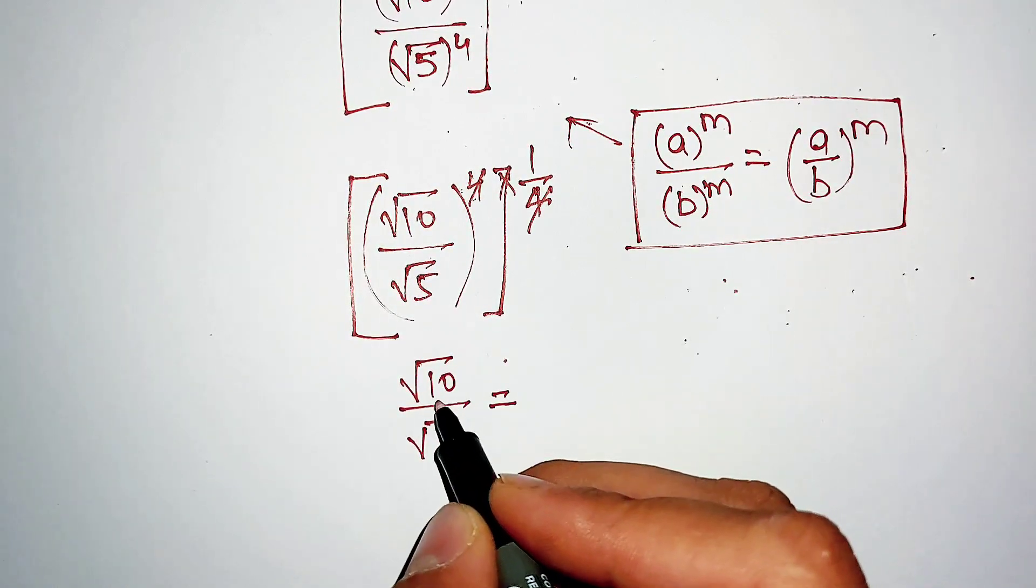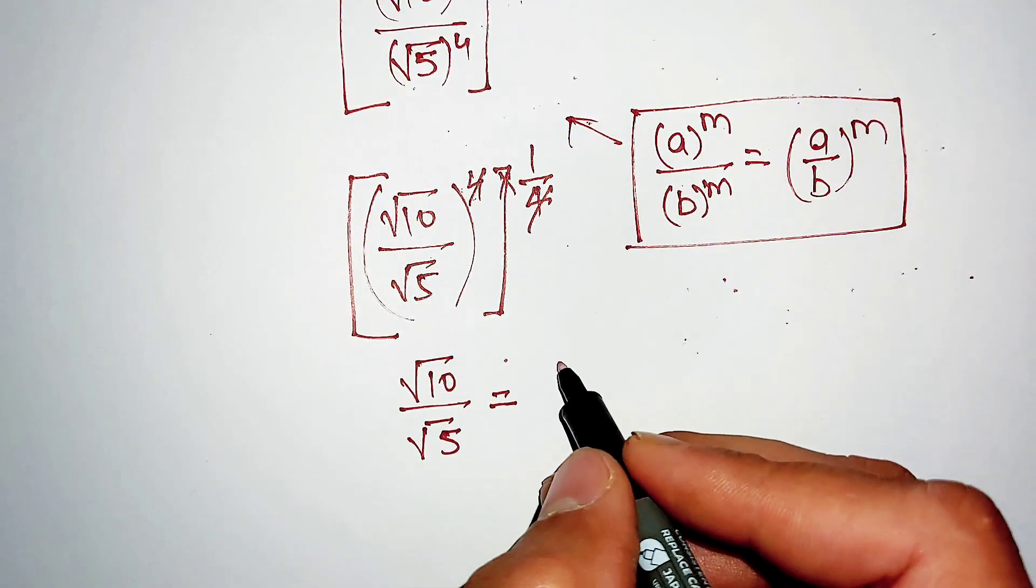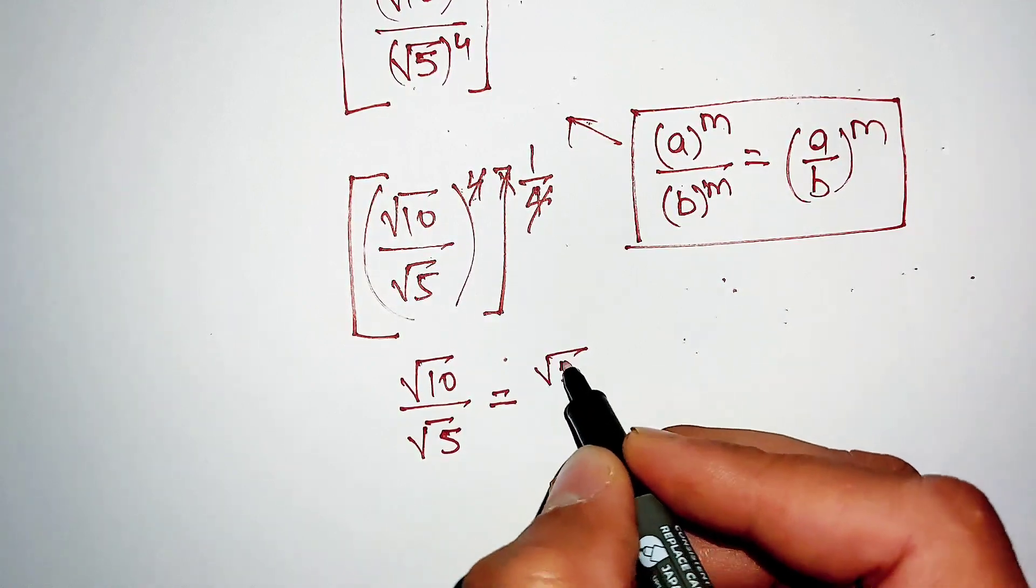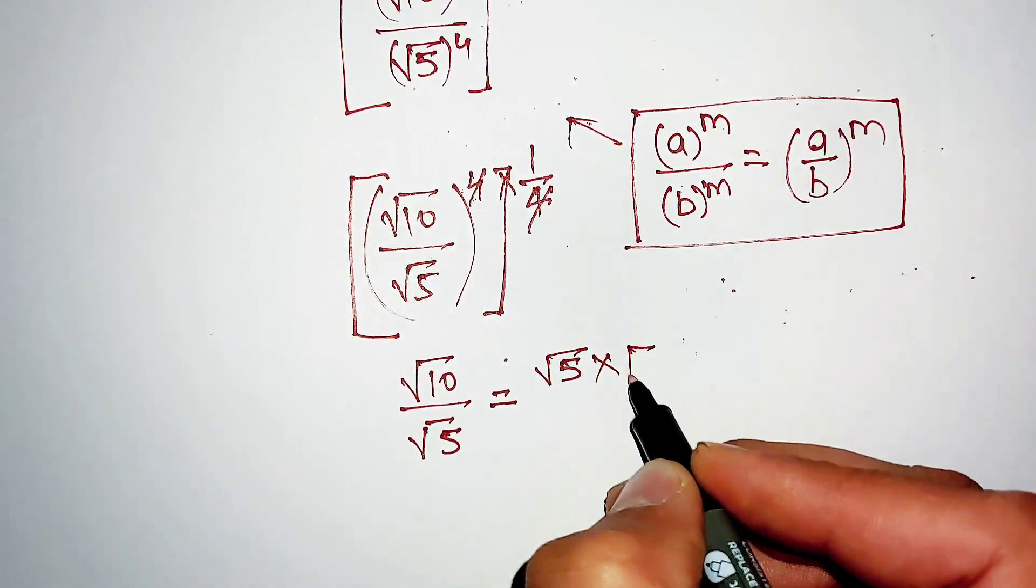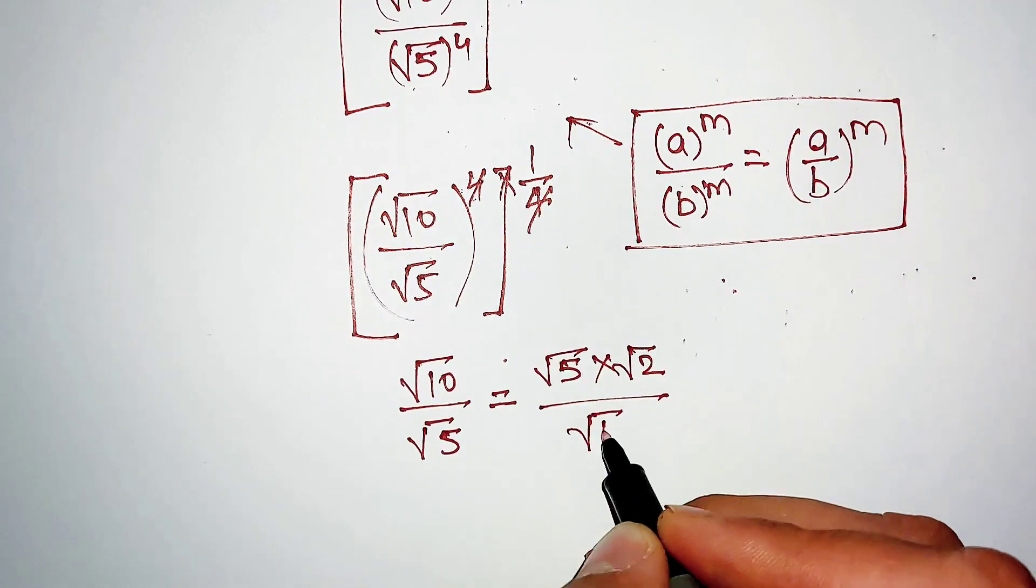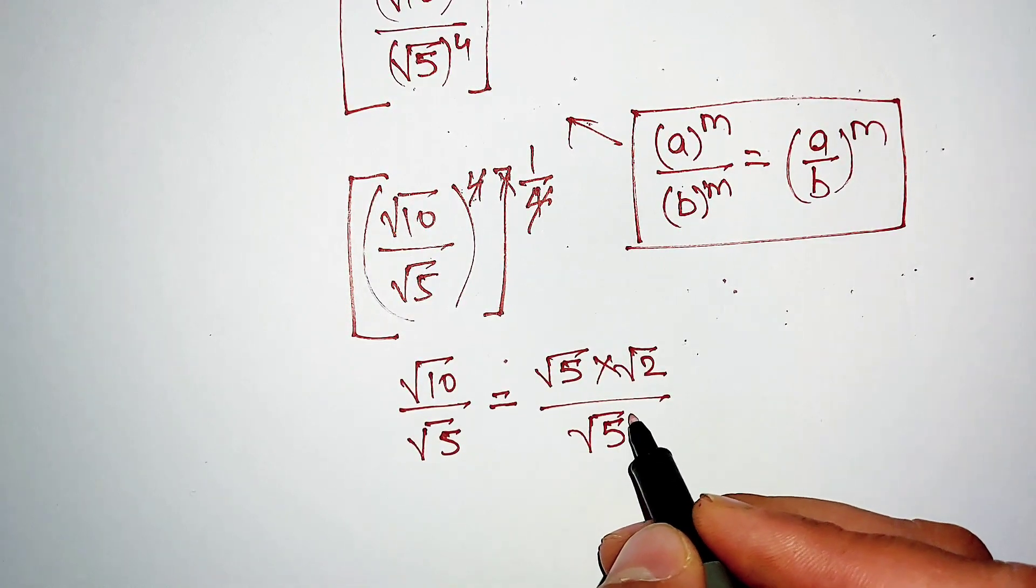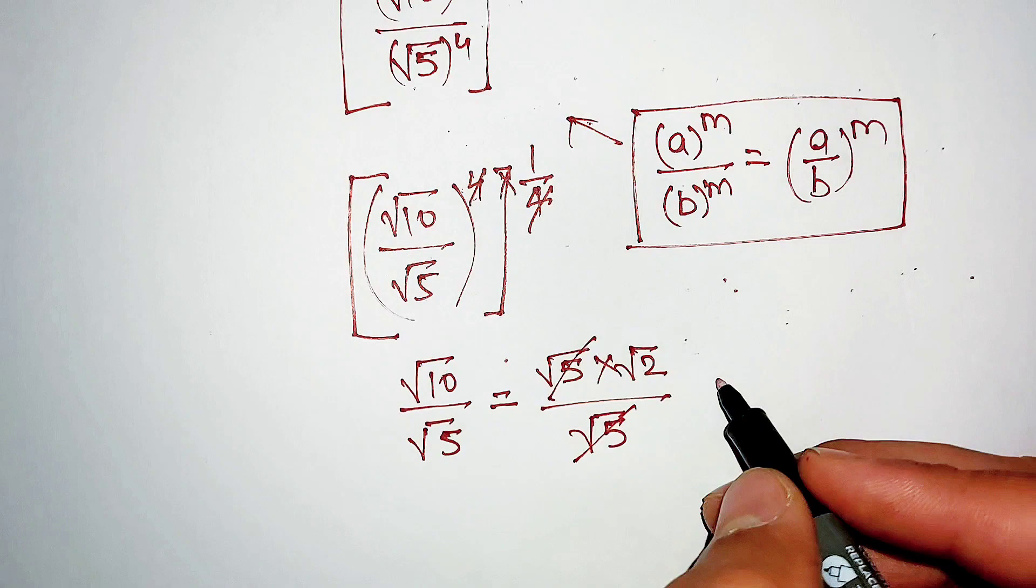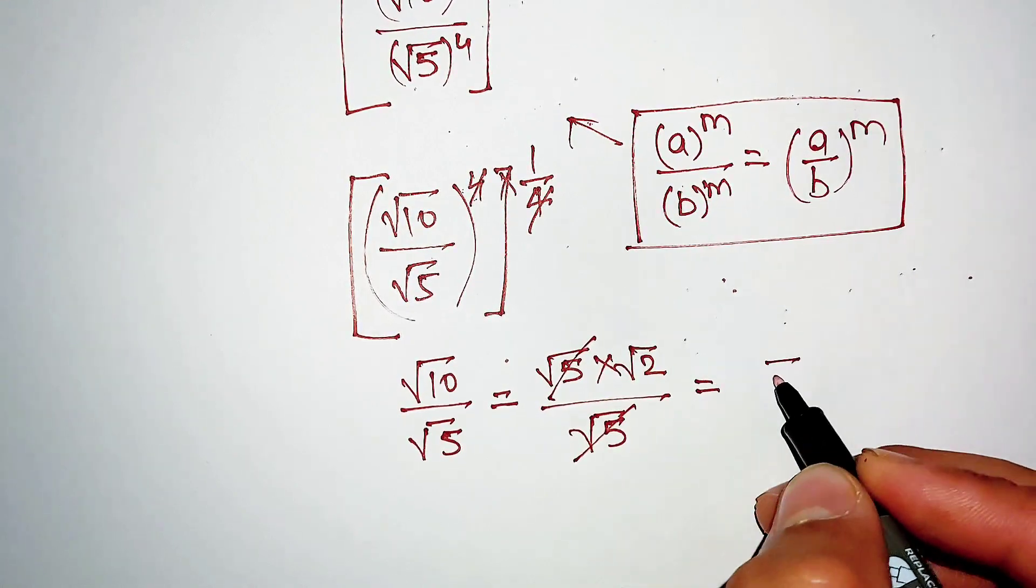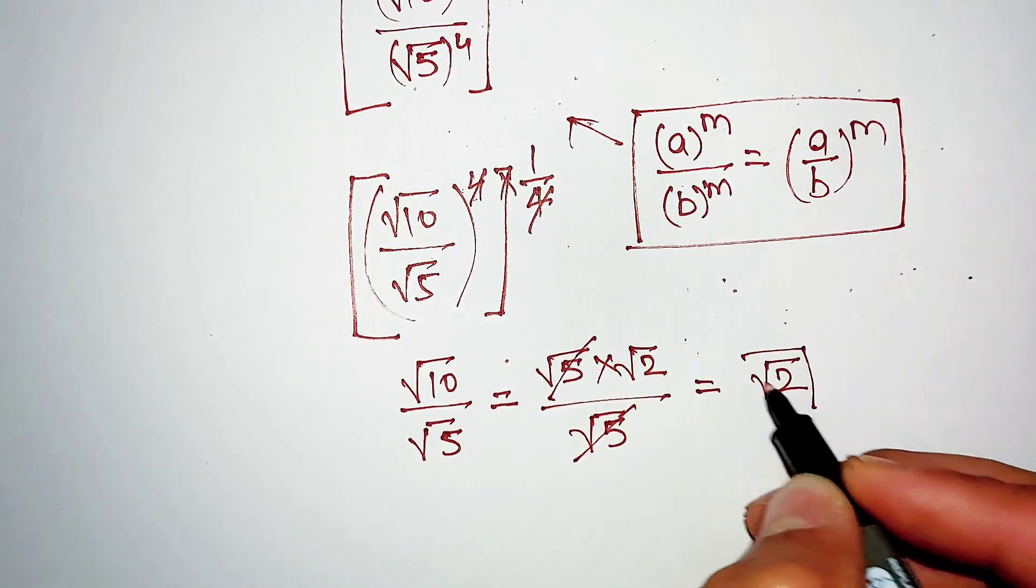Further solving this, square root of 10 can be written as square root of 5 multiplied by square root of 2, divided by square root of 5. This square root of 5 cancels with square root of 5, and our final answer is square root of 2.